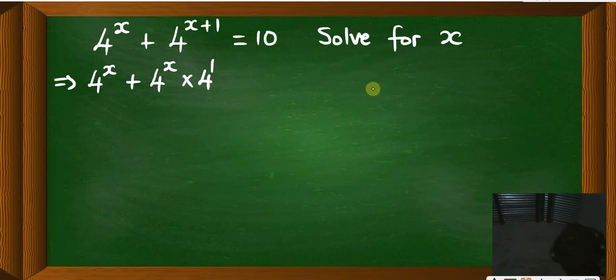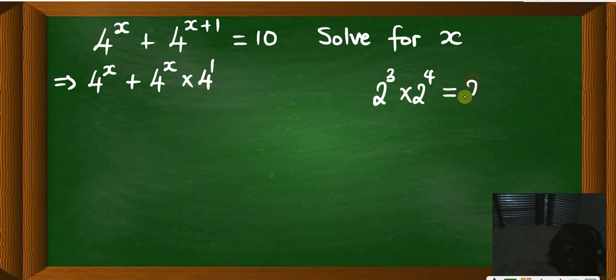For instance, if you are multiplying like 2 to the power 3 then times 2 to the power 4, what happens is you just write like 2 once, then you say 3 plus 4. That's the rule which is applying here. So what we are going to do, we are saying here that, having that, we are going to say equals to 10, as it is.